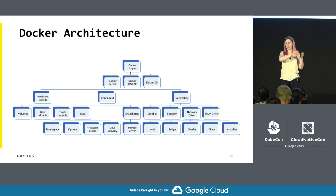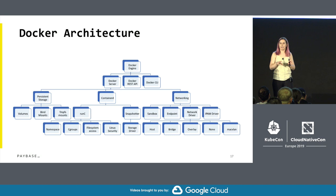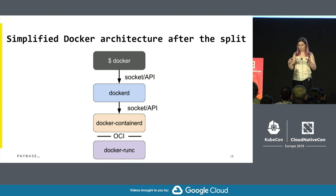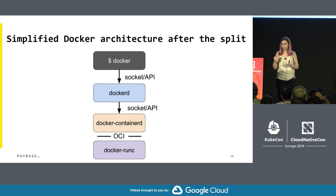Some time ago, Docker decided to split its monolithic daemon functionality into different components. So you have the Docker CLI, then Docker D — which does all the additional functionality in terms of building images and packaging — then Docker ContainerD, which is a vanilla version of ContainerD created by Docker, and then Docker RunC, which is the low-level component that creates those namespaces we talked about.